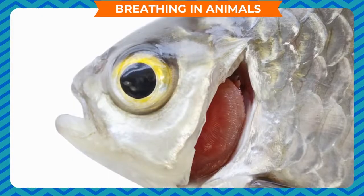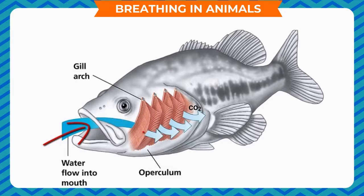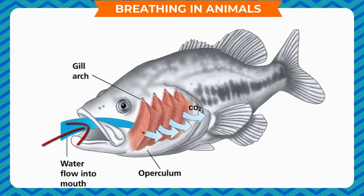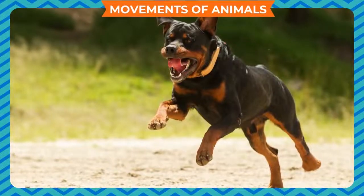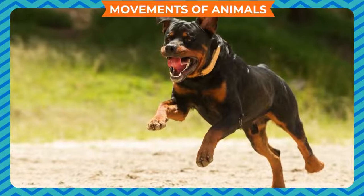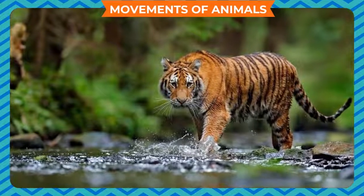Most aquatic animals such as fish, crabs, prawns, and tadpoles have gills in place of lungs to breathe. As water reaches the gills, the oxygen present in the water is absorbed by the blood, and carbon dioxide is breathed out through the gills.